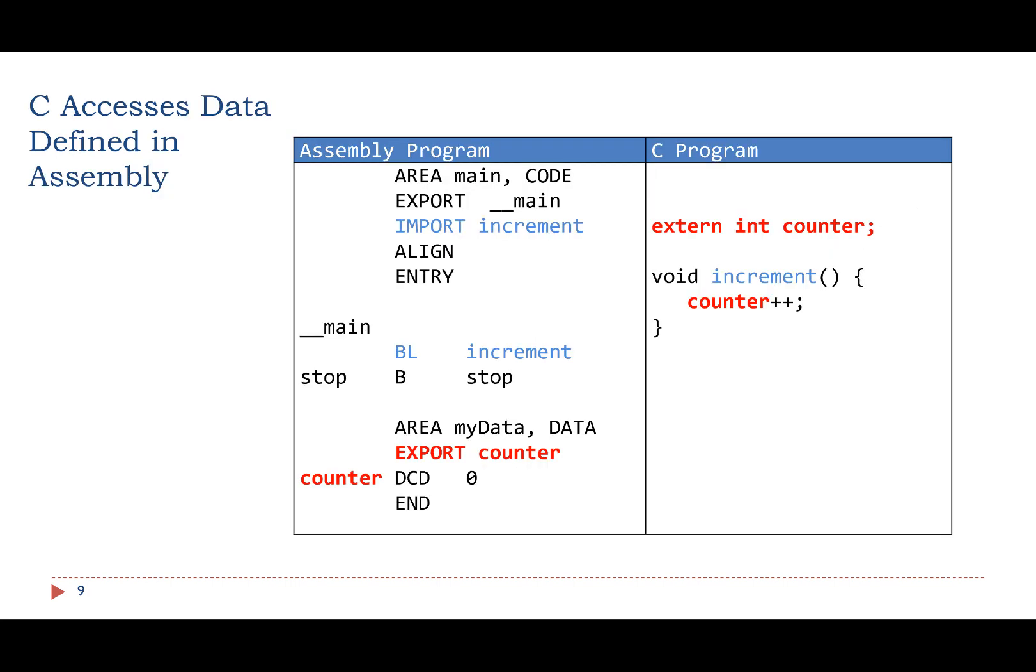A C program can access a variable defined in assembly. In this example, the variable counter is defined in the assembly code. In the C code, we use the keyword extern to inform the linker that this variable is defined in a different file.